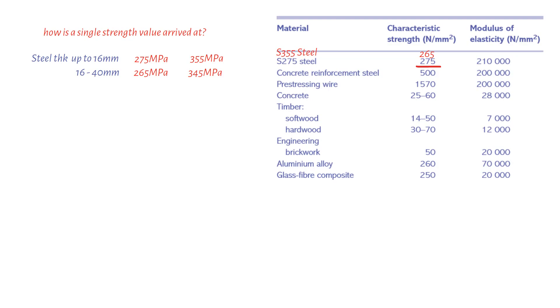Limit state codes define the characteristic strength of a particular grade of material as the strength below which not more than 5% samples will fail.